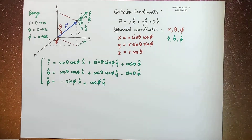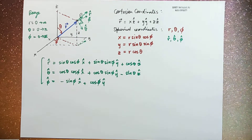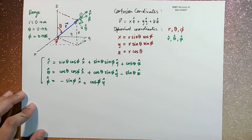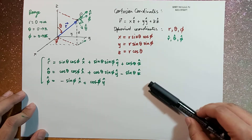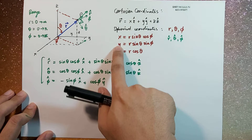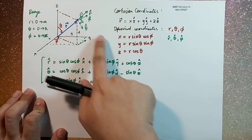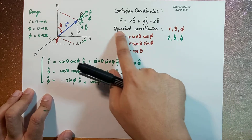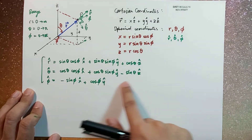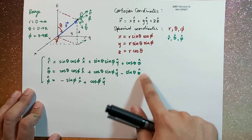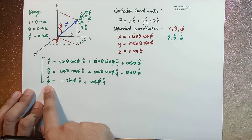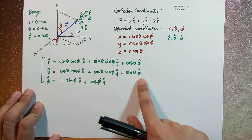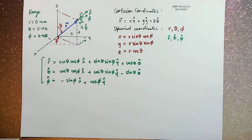What's up guys, it's me again, Sir Earnest, and today we're going to continue our discussion on the spherical coordinate system. Just a brief recap: we defined the relationship between the Cartesian components of your position vector r with the r, theta, phi components of your spherical coordinate system, and we also expressed some relationships between the unit vectors in the spherical coordinate system and the unit vectors in the Cartesian coordinate system.